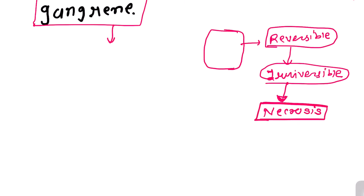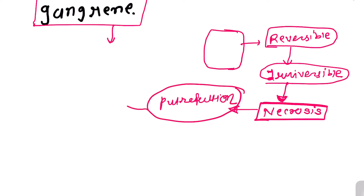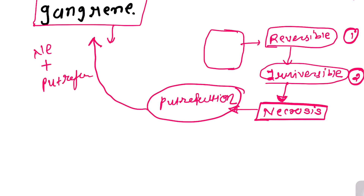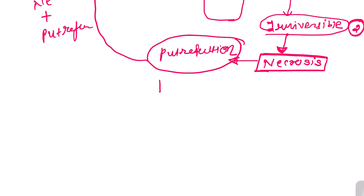Necrosis is cellular death followed by inflammation. When necrosis is followed by putrefaction, that is known as gangrene. So the stages are: reversible injury, then irreversible injury, then necrosis, and when necrosis is followed by putrefaction, the two together are known as gangrene. These gangrenes are basically classified into two main types.